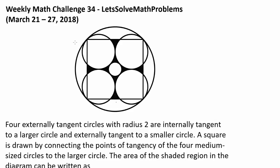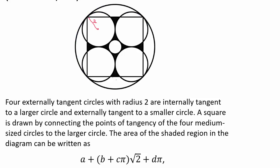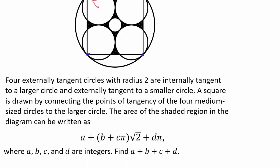We have a beautiful diagram given to us, and I see lots of points of tangency. Four externally tangent circles with radius 2 — these four with radius 2 — are internally tangent to a larger circle and externally tangent to a smaller circle inside. A square is drawn by connecting the points of tangency of the four medium-sized circles to the larger circle. The area of the shaded region can be written as an expression, and we have to find A plus B plus C plus D.